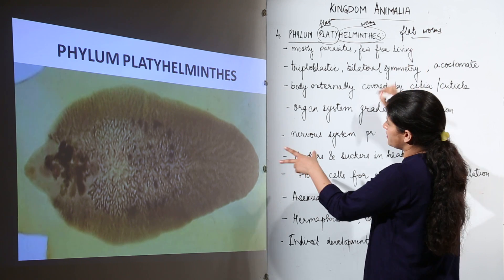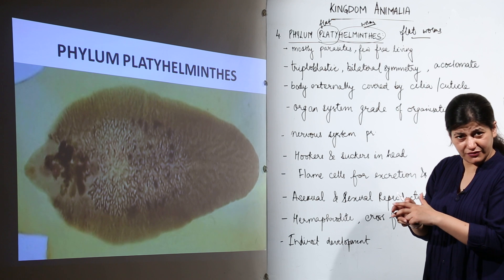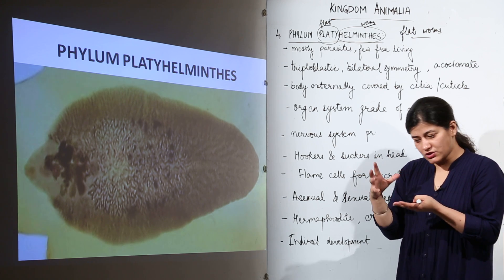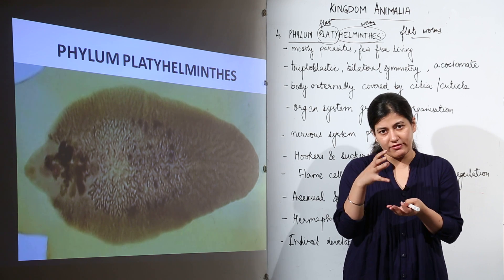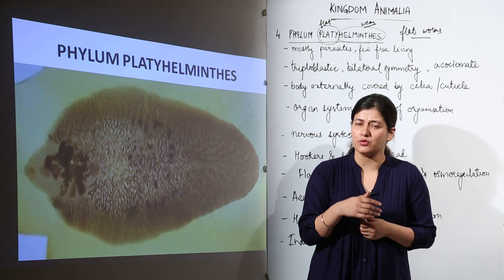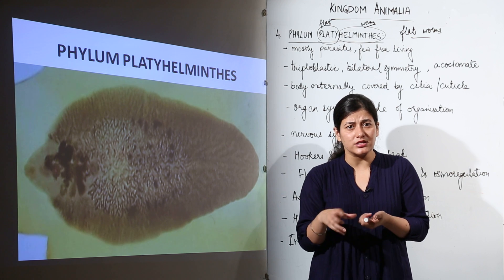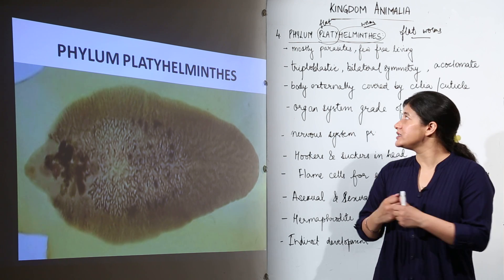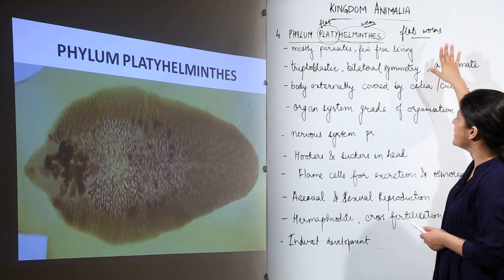As you can see, this creepy-looking organism is a liver fluke — a flatworm that is dorso-ventrally flattened. It feels like a paper sheet cut into the shape of an organism. Such dorsoventrally flattened animals are members of phylum Platyhelminthes — they are flatworms.